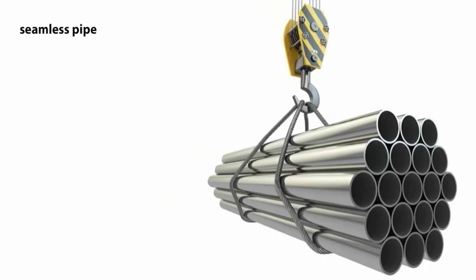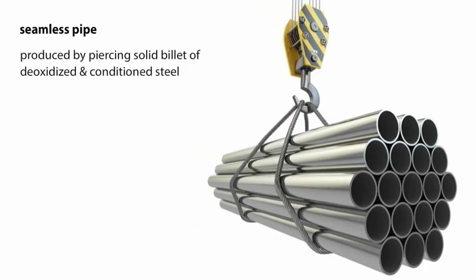Seamless pipe is produced by piercing a solid billet of deoxidized and conditioned steel which has been heated to a required temperature. It is then processed through a series of mills and rolls until it is finished to prescribed dimensions.